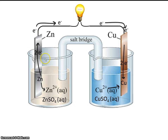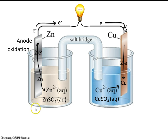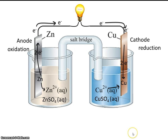Conversely, the zinc electrode gets smaller and smaller because the zinc is eaten away — oxidized — and enters the solution. Because we have oxidation at this electrode, it is called the anode. And the copper electrode is called the cathode because reduction takes place there.